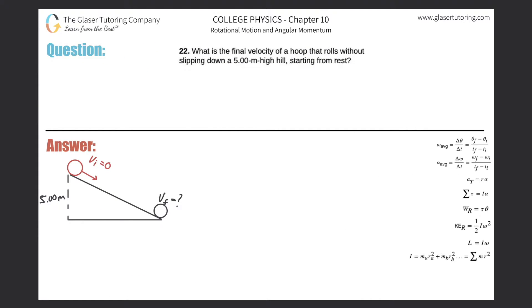Number 22. What is the final velocity of a hoop that rolls without slipping down a 5 meter high hill, starting from rest? Alright, so here I have a little picture. The hill here is going to be 5 meters high. The initial velocity of this rotating hoop is going to be 0, and it's going to obtain some final velocity. And that's what we're asked to find.